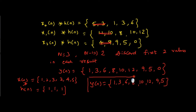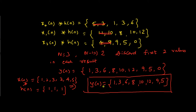This is the convolution of the two sequences using the overlap save method. You can verify this result with the overlap add method done earlier — both methods yield the same result. This is the value of linear convolution computed with fewer operations and multiplications compared to the usual linear convolution method. The final answer is 1, 3, 6, 8, 10, 12, 9, 5, which has length 8.